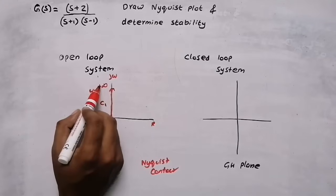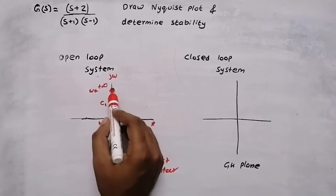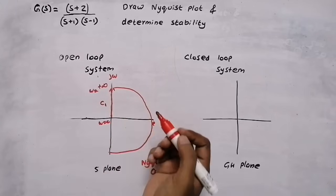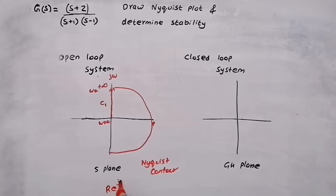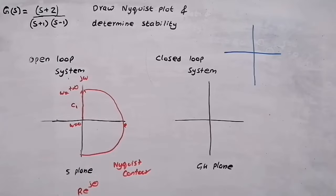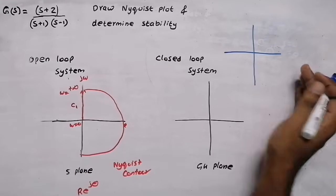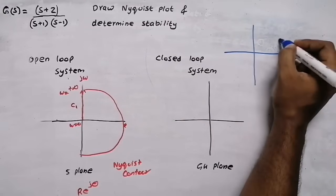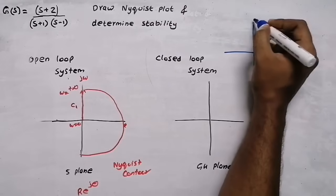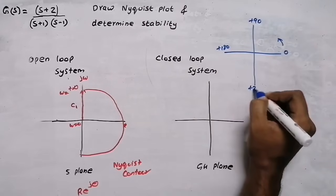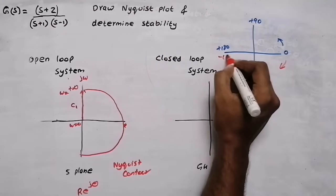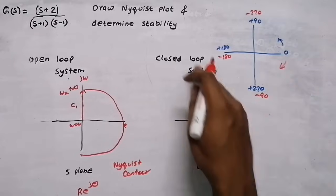C1 is from omega equal to 0 to omega equal to positive infinity. Then I take the entire right half plane as a circle with radius infinity — that is region C2. In polar plot, angles are positive in the anti-clockwise direction and negative in the clockwise direction. So 0, plus 90, plus 180, plus 270 anti-clockwise; and minus 90, minus 180, minus 270 clockwise.